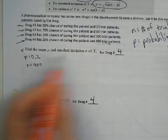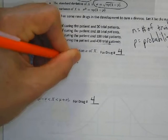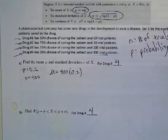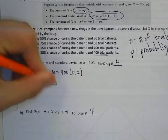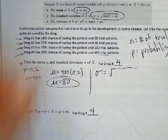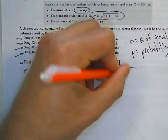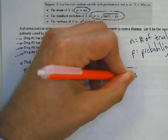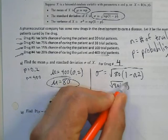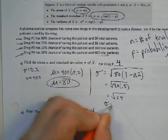To find the mean, we calculate 400 times 0.2 — the number of trials times the percentage — which gives us 80. To find the standard deviation, we take the square root of NP times (1 minus p): that's the square root of 80 times 0.8, which is the square root of 64, giving a standard deviation of 8.